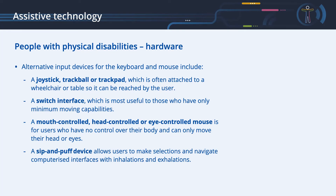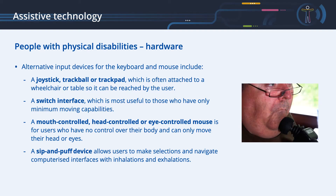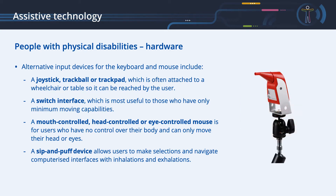Assistive technology for people with physical disabilities — Hardware. Alternative input devices for the keyboard and mouse include: a joystick, trackball, or trackpad, which is often attached to a wheelchair or table; a switch interface, most useful to those who have only minimum moving capabilities; a mouth-controlled, head-controlled, or eye-controlled mouse for users who have no control over their body; and a sip-and-puff device, which allows users to make selections and navigate computerized interfaces with inhalations and exhalations. A user with physical disabilities might use one or many of these solutions, depending on their personal preferences and capabilities.